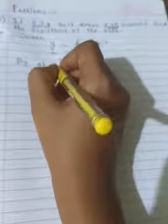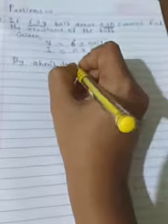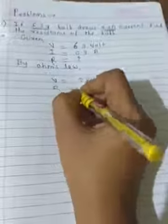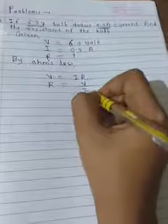By Ohm's law, V is equal to IR. So what we want is R equals what? R is equal to V upon I.